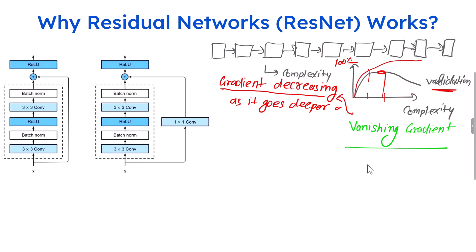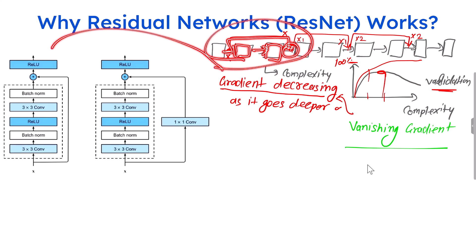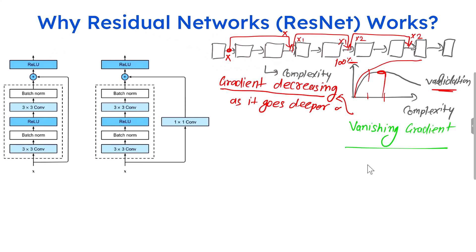So how does ResNet solve this problem? ResNet creates a skip connection. The input information, let's say X, is passing through the network. And similarly, let's say this information is X1, this is coming directly here. And if it is X2, then this is also coming directly. So the input goes through the network, and along with that, the input also goes via the skip connection as well.